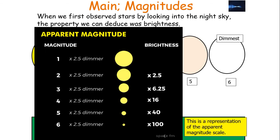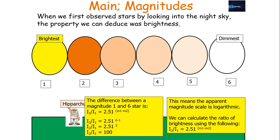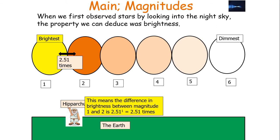Here is a representation of the apparent magnitude scale. We can calculate the ratio of brightness using the equation: intensity of star 2 over intensity of star 1 equals 2.51 to the power of (m1 minus m2), the difference in apparent magnitudes. For example, to find the ratio of brightness between a magnitude 1 and magnitude 6 star, we calculate 2.51⁵, which equals 100. The difference in brightness between magnitude 1 and 2 is 2.51¹, which is 2.51 times.